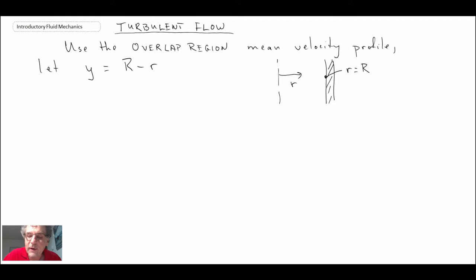Looking at it in this manner if we have R minus r, so on the outer wall at r equals capital R we get y equals 0.